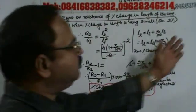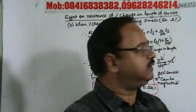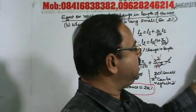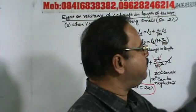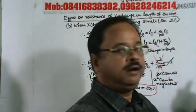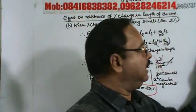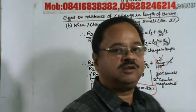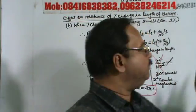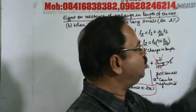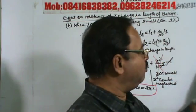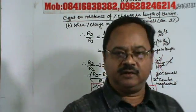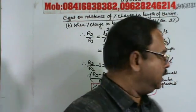A copper wire is stretched in such a way to make it 2% longer. What is the percentage change in the resistance of the wire?